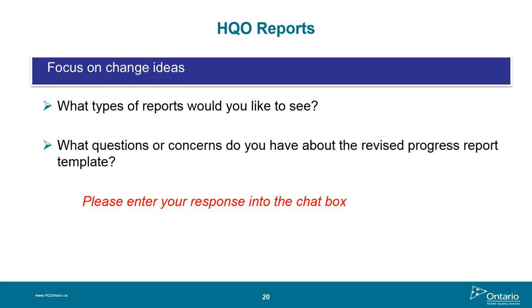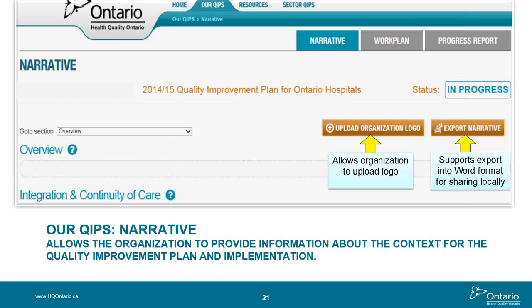After reviewing progress made over 2014-15, we move into the narrative section. Remember that this is your document and it needs to reflect your local organization — it also provides the context for the priorities you're selecting in your work plan. This is also where you can upload your organization's logo and export the narrative component for your own use. There are several sections to include in the narrative as outlined in the guidance document, such as overview, integration and continuity of care, and risk challenges and mitigation strategies.